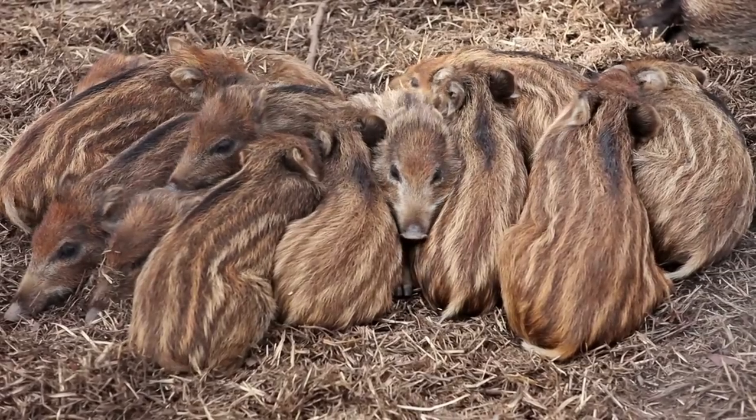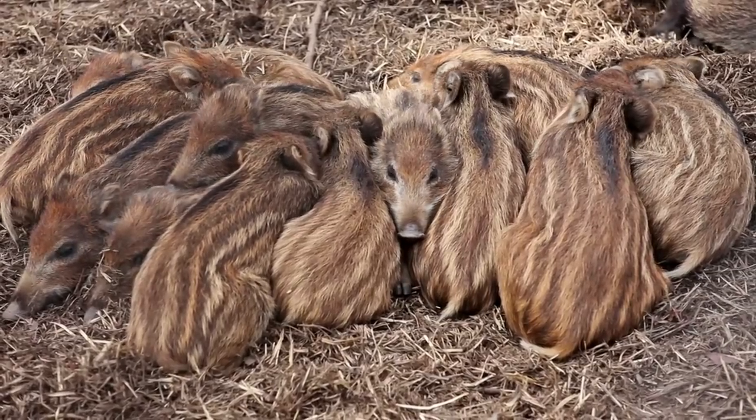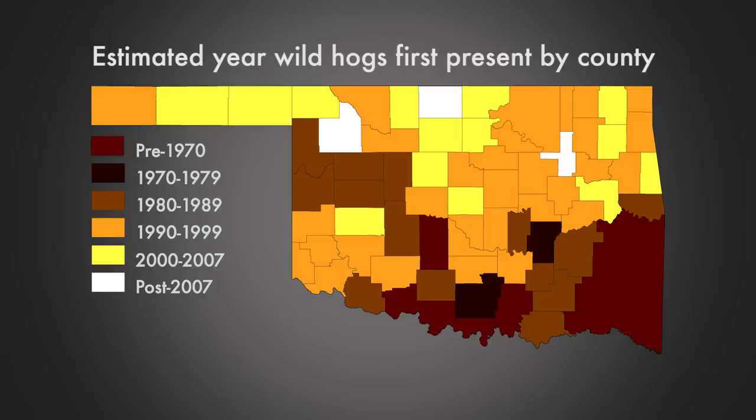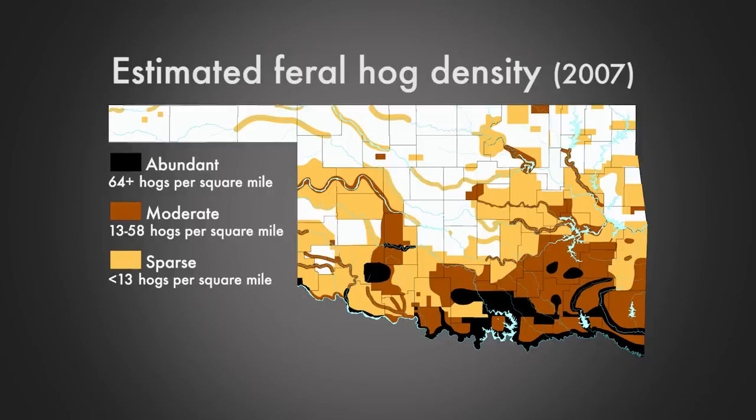Feral hogs are the most prolific large mammal in North America. They can breed at the young age of six months, and sows can have up to 15 piglets in a litter, though the average tends to be five to six. Here in South Central Oklahoma, wild pigs became more abundant in the early 1990s, though they have been documented in Oklahoma as early as the 1960s or 1970s. The numbers began to grow as interest in hunting them grew, and we believe wild pigs have been moved across the state with the aid of humans interested in hunting them. We now have wild pigs in every county in Oklahoma.